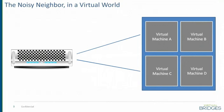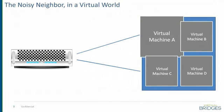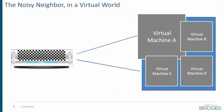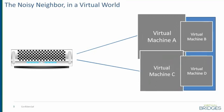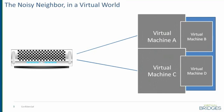Now if virtual machine A starts to download a video from YouTube or from another resource, it might actually extend beyond the physical resources available on the machine and start impeding on the performance of the other virtual machines around it. Virtual machine C might also in turn start doing something that takes up too much disk or maybe saturates the network even further, and now performance on all the machines on your server has degraded.